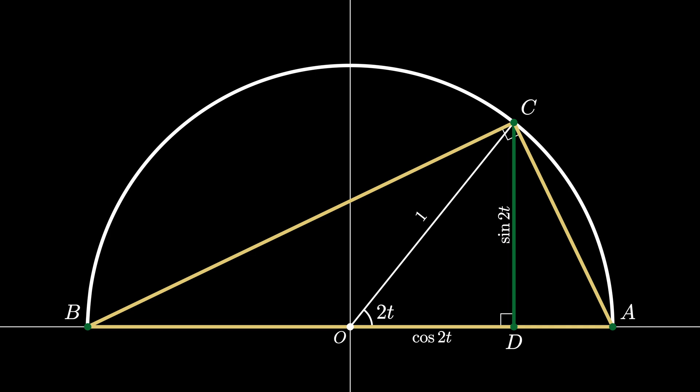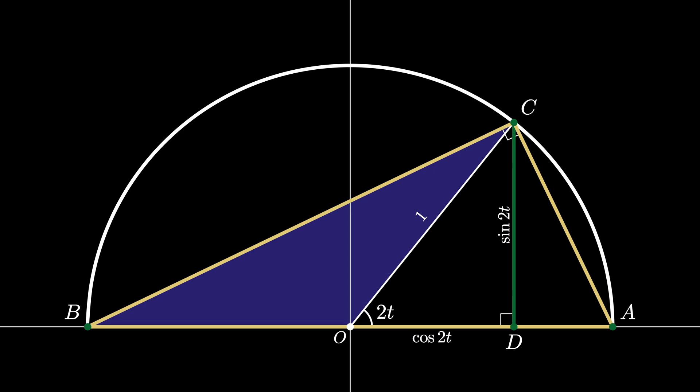Now consider the triangle BOC. The angle BOC is supplementary to the angle 2t and therefore has a measurement of 180 minus 2t.